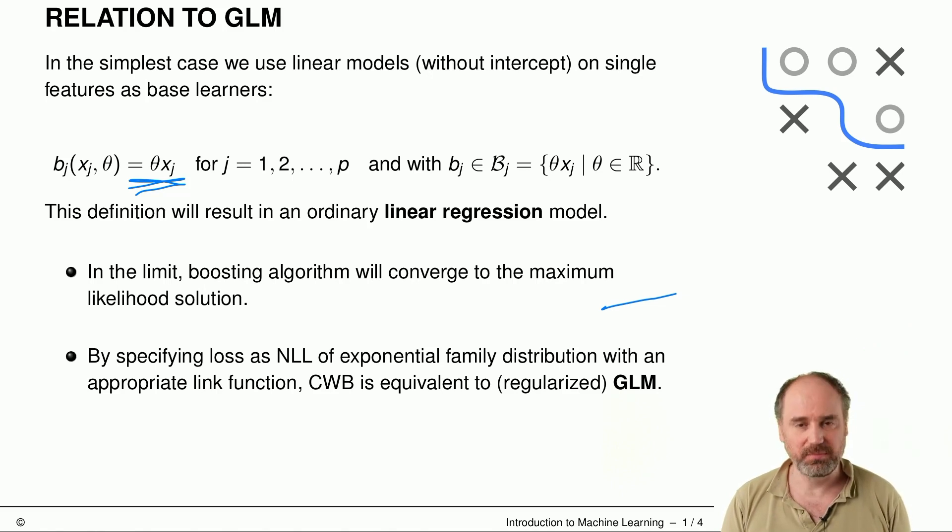We'll converge to the maximum likelihood estimator, and as we have discussed before, that's basically the same as doing full risk minimization on our linear model. If we specify a certain loss as the negative log likelihood of an exponential family distribution with an appropriate link function, then component-wise boosting is really equivalent to either a regularized or unregularized generalized linear model, a GLM. That's the interesting part—the regularization and the feature selection.